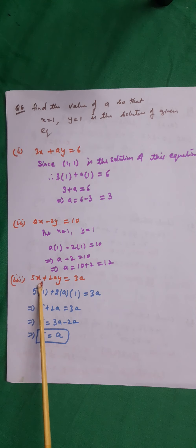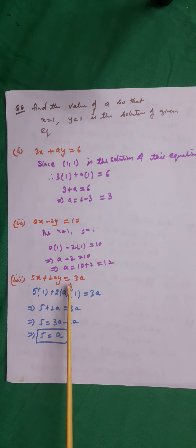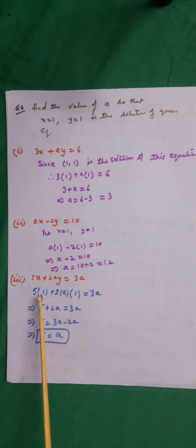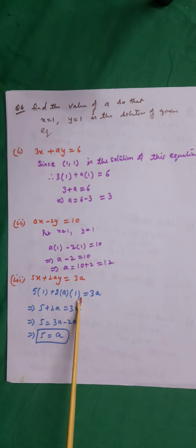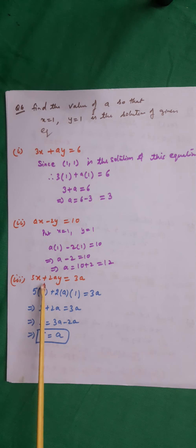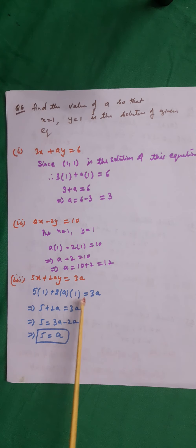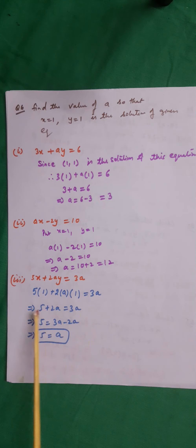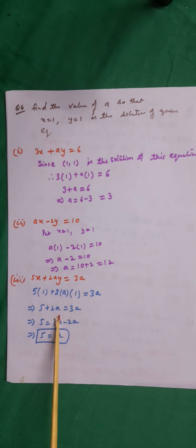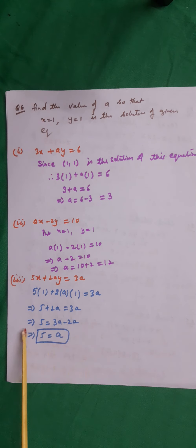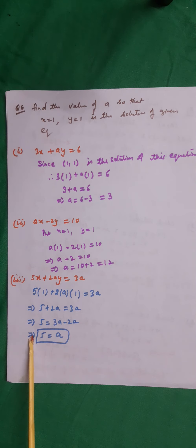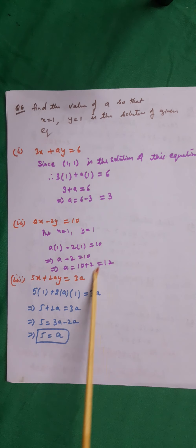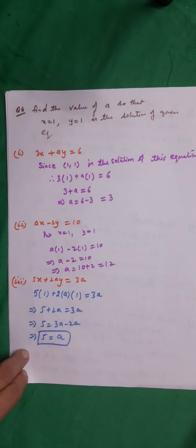Third: 5x plus 2ay equals 3a. Put x equal to 1 and y equal to 1. We get 5 into 1 plus 2a into 1 equals 3a, which gives 5 plus 2a equals 3a, so 5 equals 3a minus 2a, meaning a equals 5. In all these questions we have found the values of a.